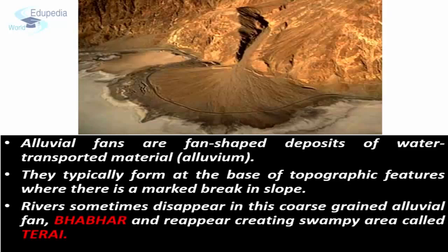Beyond this belt of alluvial fans, the river reappears and causes the land to become fully saturated with water. Such a swampy region is known as Terai.